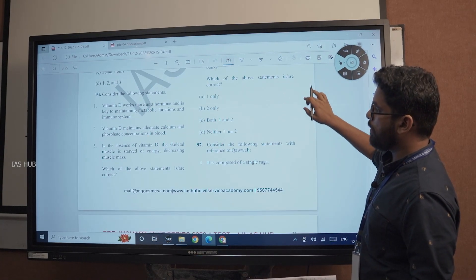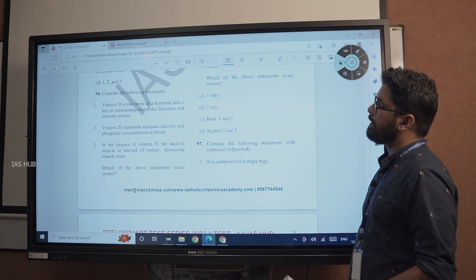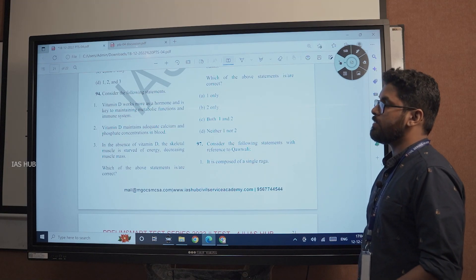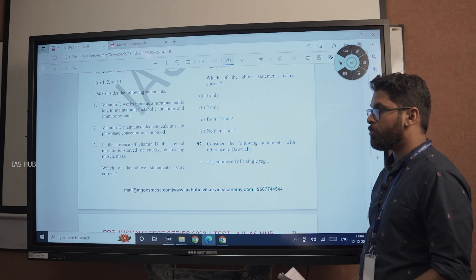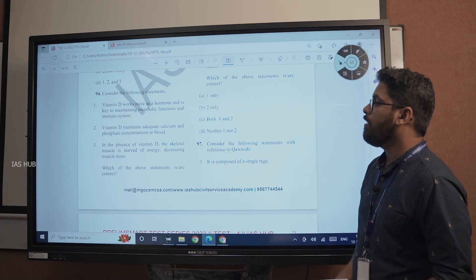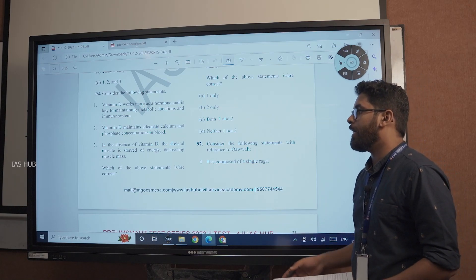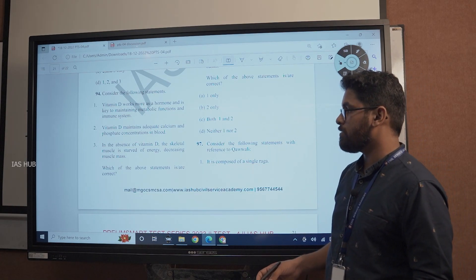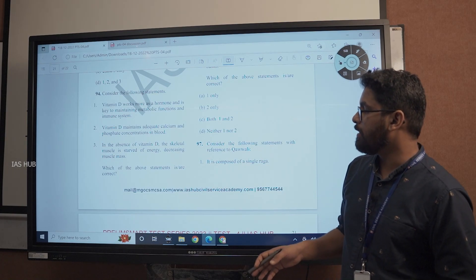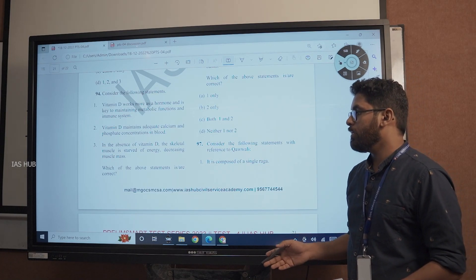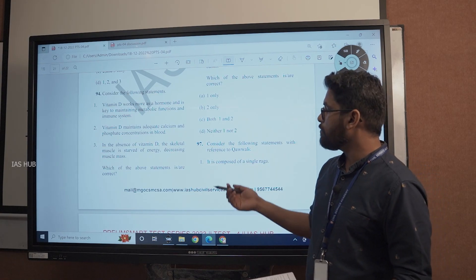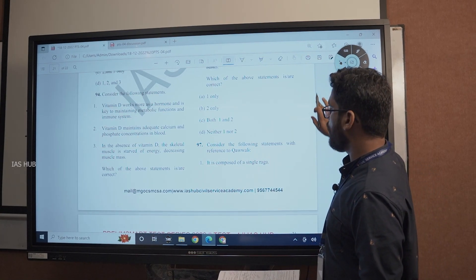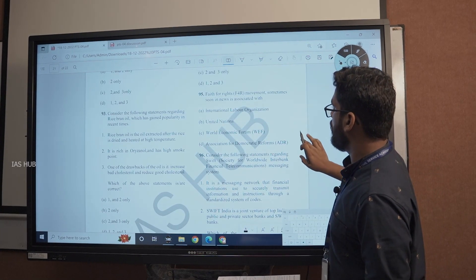Coming to question number 94. Again a general statement question. Vitamin D works more as a hormone and is key to maintaining metabolic functions and immune system. Very easy statement. Vitamin D maintains adequate calcium and phosphate concentrations in blood. In the absence of vitamin D the skeletal muscle is starved of energy decreasing muscle mass. Again very basic statements. All these three statements are correct.